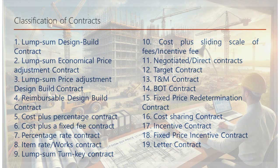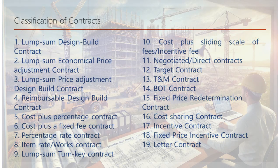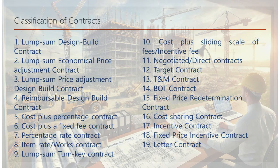11. Negotiated direct contracts: terms are directly negotiated between the owner and contractor without competitive bidding. 12. Target contract: a target cost is set with incentives or penalties depending on whether the contractor meets this target. 13. T&M contract (time and materials): the contractor is paid based on time spent and materials used, often with a markup for overhead and profit. 14. BOT contract (build-operate-transfer): the contractor builds the project, operates it for a set period, and then transfers ownership to the client. 15. Fixed-price redetermination contract: initial pricing is fixed but can be adjusted based on defined criteria during the project.